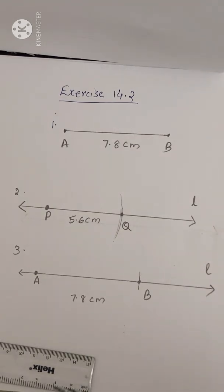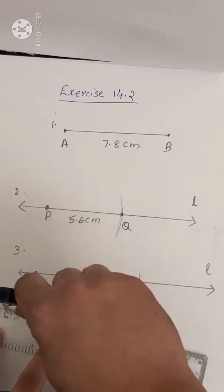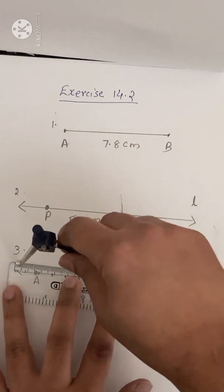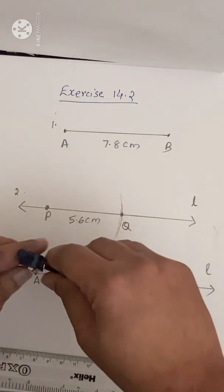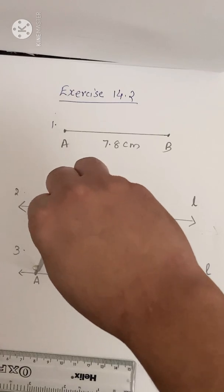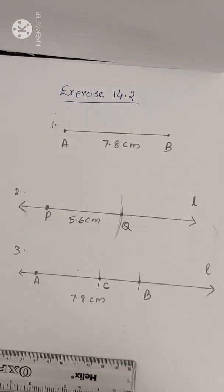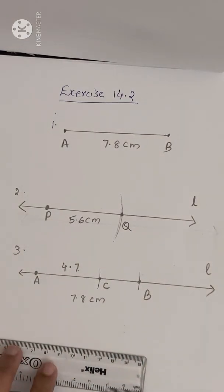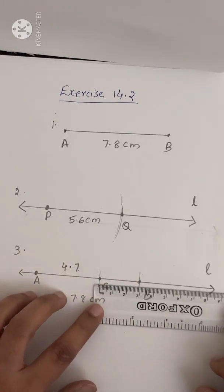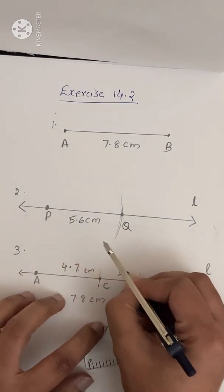Now what you have to do is cut off line segment AC of length 4.7 cm. AC means from A you have to cut off the line segment. The measurement is given as 4.7 cm. Take 4.7 cm and from A cut an arc like this — this is AC. AC's length is 4.7 cm. Now you have to find the length of BC. Measure it using the ruler — it will become 3.1 cm. BC is 3.1 cm.